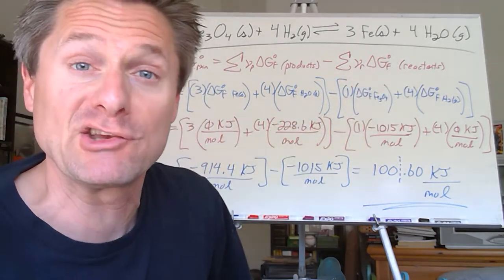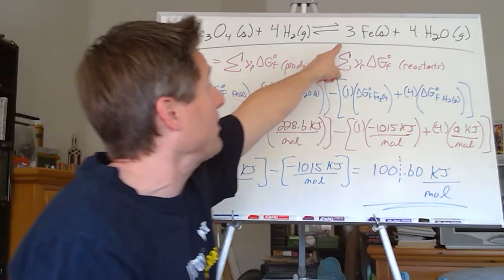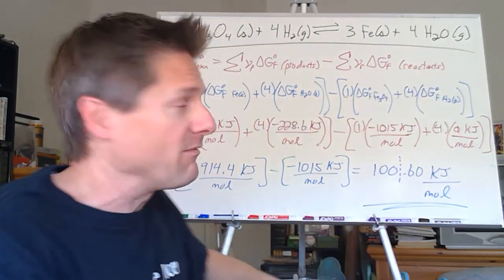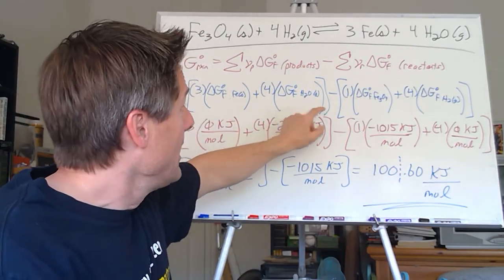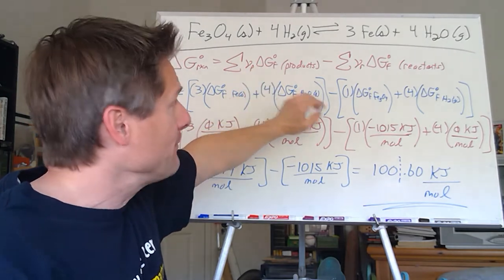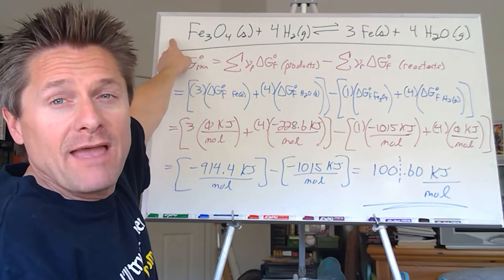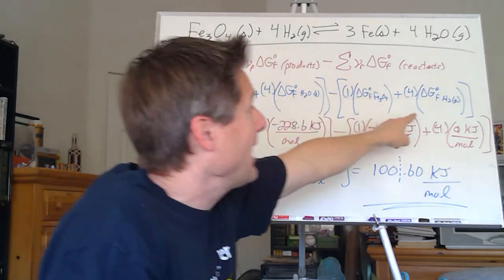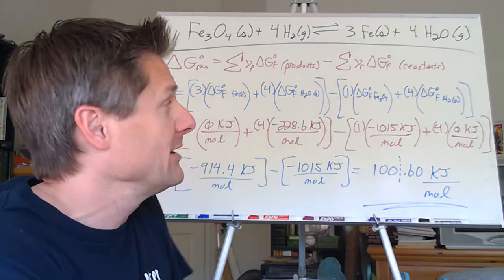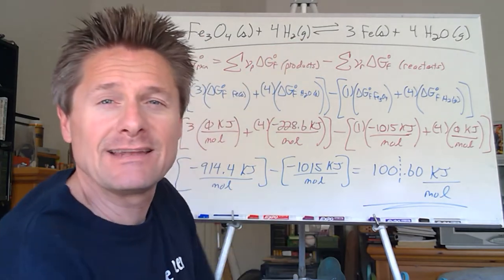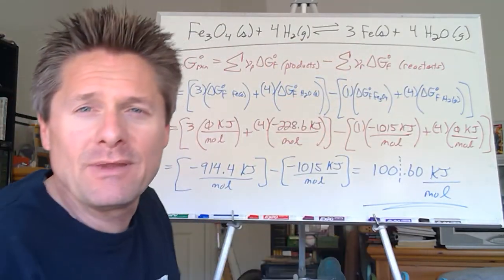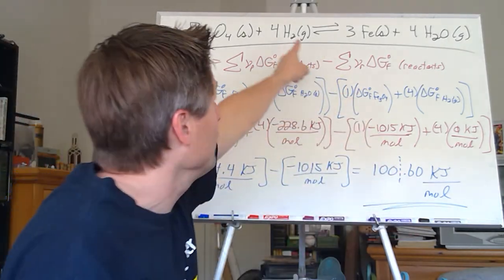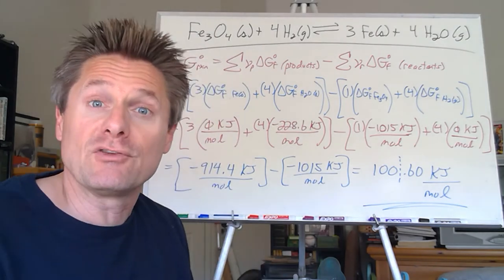We've got a coefficient of three in front of solid iron, so three times its table value, plus four times whatever H₂O gas is on the table — those are our products. Subtract: one times the Fe₃O₄ solid value plus four times the hydrogen gas value. Hydrogen gas is an element in its standard state, so its delta G of formation is zero. Iron solid is also zero. You don't even need to look those up — just put zero in there.